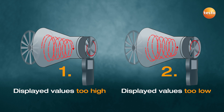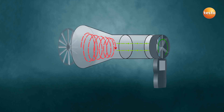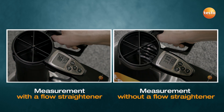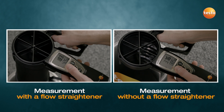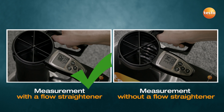Result? An inadequate flow velocity is displayed. What does the flow straightener do? With the patented TestoVent 417 flow straightener, any rotational movement of the air is first calmed and changed to a straight flow direction. This directed airflow is then reliably recorded with the vane. That way, the most accurate measurement results are achieved quickly and easily.